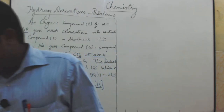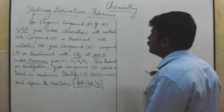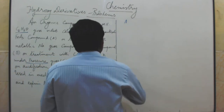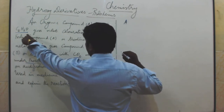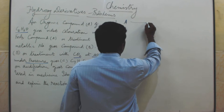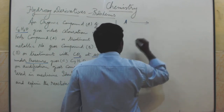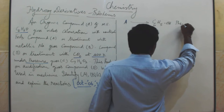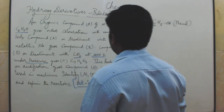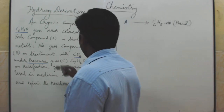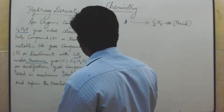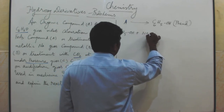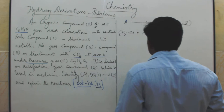Now we write out the solution. Compound A has molecular formula C6H6O and reacts with neutral ferric chloride, giving violet color, so compound A is phenol. Phenol reacts with metallic sodium to give sodium phenoxide, which is compound B.